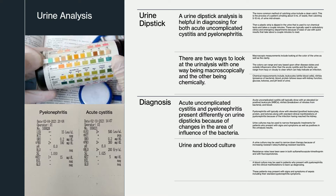Urinalysis is used in helping diagnose both acute uncomplicated cystitis and pyelonephritis. The way this is used is that we get a clean catch — the patient will provide a clean catch of midstream urine, about five to ten milliliters. We take a strip that's dipped in the urine to run chemical tests, which takes a couple minutes. Macroscopically, we look at the color and clarity of the urine — any outstanding color changes as well as whether the urine is cloudy or hazy. Chemical measurements include leukocytes for white blood cells, nitrites for the presence of bacteria, blood, and protein, as well as many others.